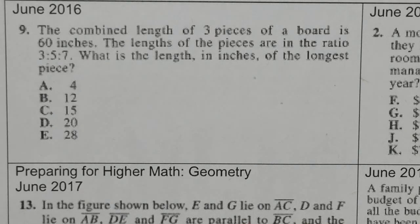The combined length of three pieces of a board is 60 inches. The lengths of the pieces are in the ratio 3 to 5 to 7. What is the length in inches of the longest piece?